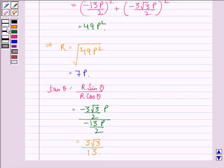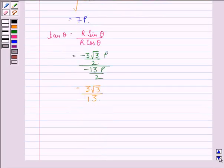So our answer to this question is: the magnitude of the resultant is 7p and the direction, that is tan theta, is equal to 3 root 3 divided by 13.